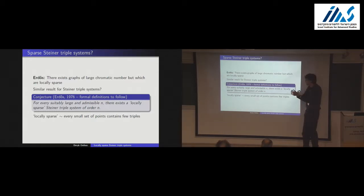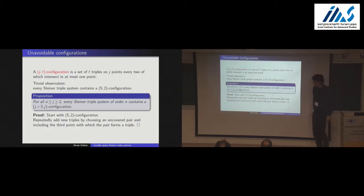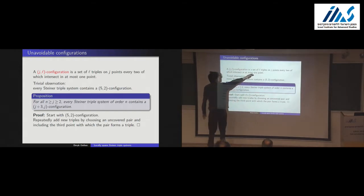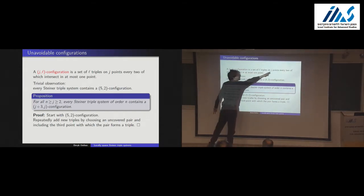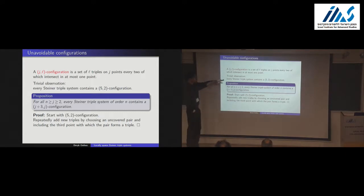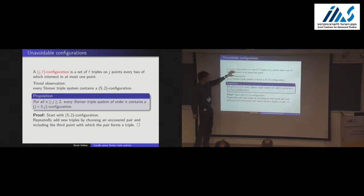So what does 'few' and 'small' actually mean? A JL configuration is a set of L triples on J points such that any two triples intersect in at most one point — so a JL configuration is a partial Steiner triple system. J is the number of points and L is the number of triples.